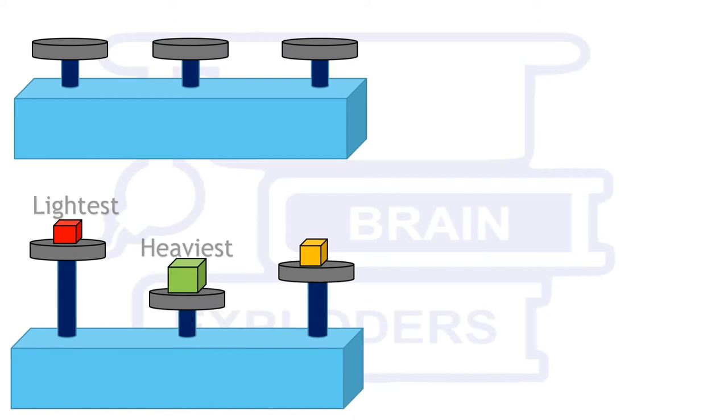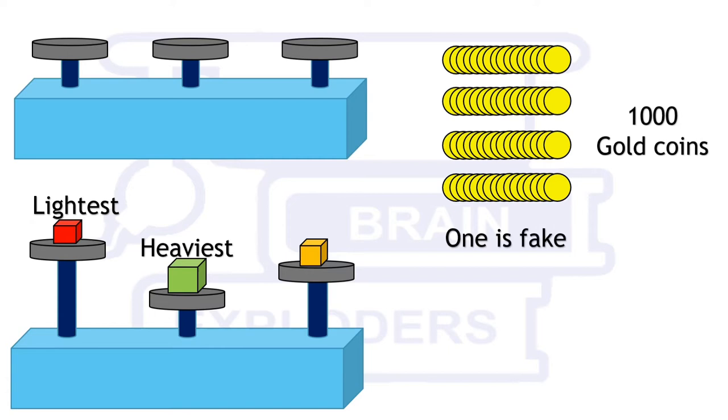This is the weighing balance having three pans which cannot give the exact reading but compare three weights at once. Using this balance you have to find a slightly heavier fake coin among 1000 gold coins in as few trials as possible.